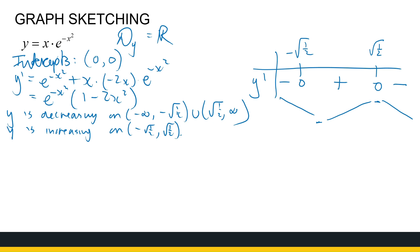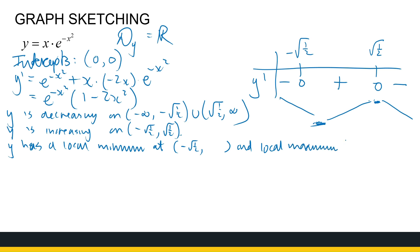For minimums and maximums: where the function changes from decreasing to increasing gives a minimum, and from increasing to decreasing gives a maximum, as long as the original function is defined at that value — and this one is. So y has a local minimum at x equals minus root of a half, and a local maximum at x equals root of a half. To find the y-values we substitute back into the original function. Rounding off, you get minus 0.43 and 0.43 as the y-values of the minimum and maximum.